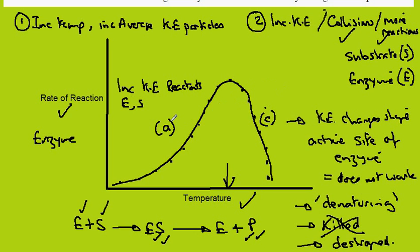Returning to the graph, with the increase in the kinetic energy of the reactants, the reaction occurs faster, increasing rate in the first section. And in the second section, the rate declines quickly as the enzyme is denatured.